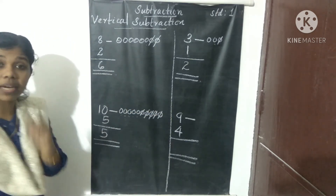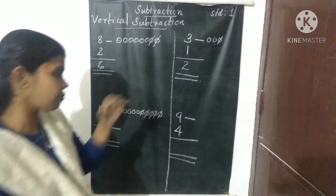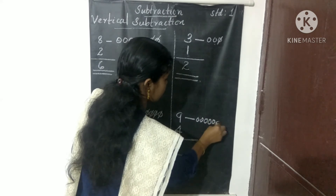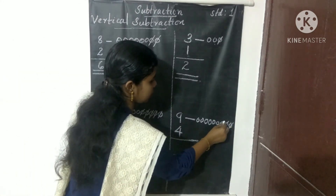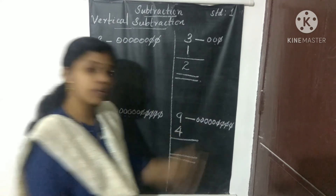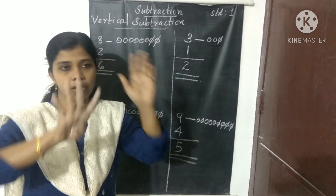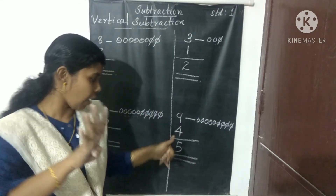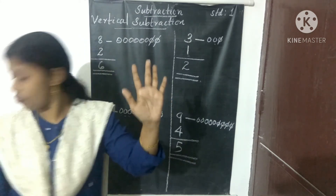Next question: 9 minus 4. Total objects are 9, and 4 objects are taken away. Draw 9 beads: 1, 2, 3, 4, 5, 6, 7, 8, 9. Cross out 4: 1, 2, 3, 4. What is the balance? Count: 1, 2, 3, 4, 5 — the answer is 5. Using hands: take 9 (which is 5 plus 4). Take away 4: 1, 2, 3, 4 taken away. The balance is 5.